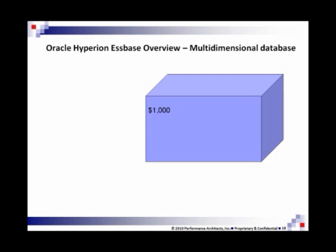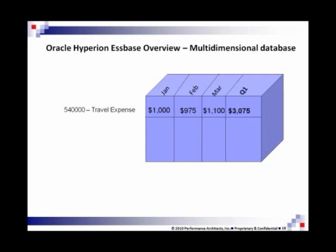Before you, you see a three-dimensional cube with $1,000 in it. That's some piece of data, but that is not information — you have no idea what that is. So let's continue adding pieces to our puzzle. I've got $1,000 of travel expense; that helps a little bit but really not enough to answer any questions. Adding another piece: January expenses are starting to come together. February, March — Quarter 1 travel expense: $3,075. That's starting to turn some data into information.